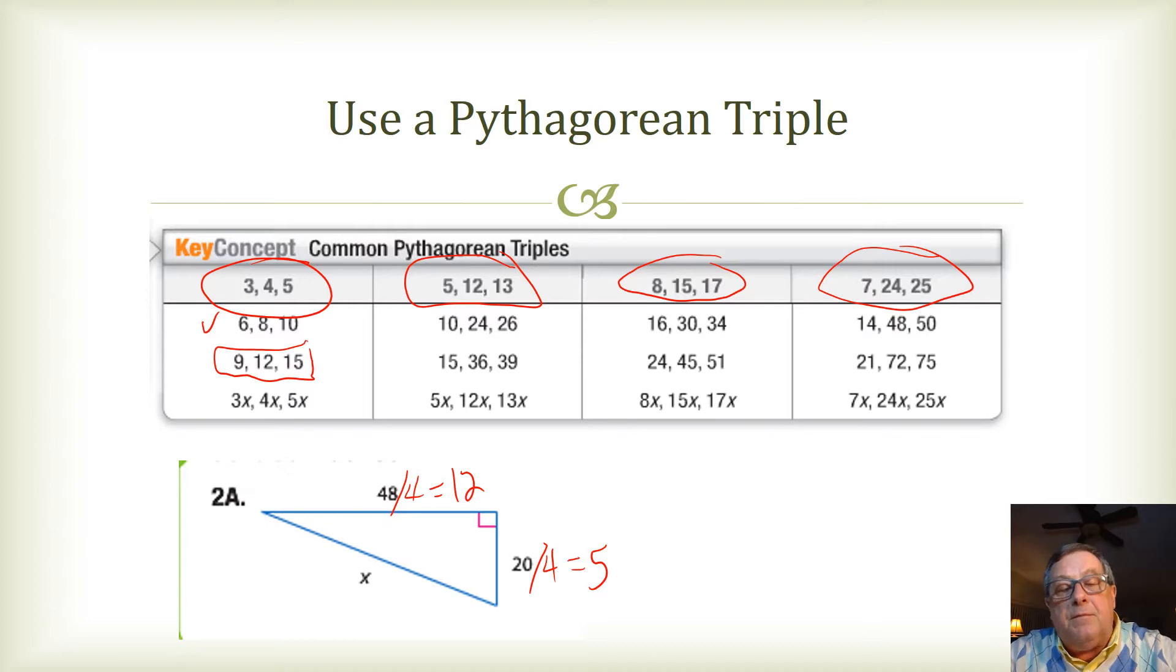Now, to find this measure of X using Pythagorean triples, I just simply multiply 13 times 4. And 13 times 4, then, is 52. Yeah, 2 times 13 is 26, times 2 is 52.